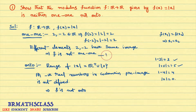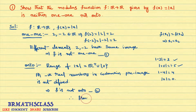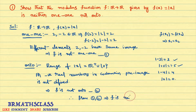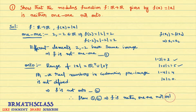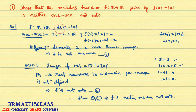So from equation 1 and equation 2, we can say that f is neither one-one nor onto. Now we will try to understand the same concept with one more example.